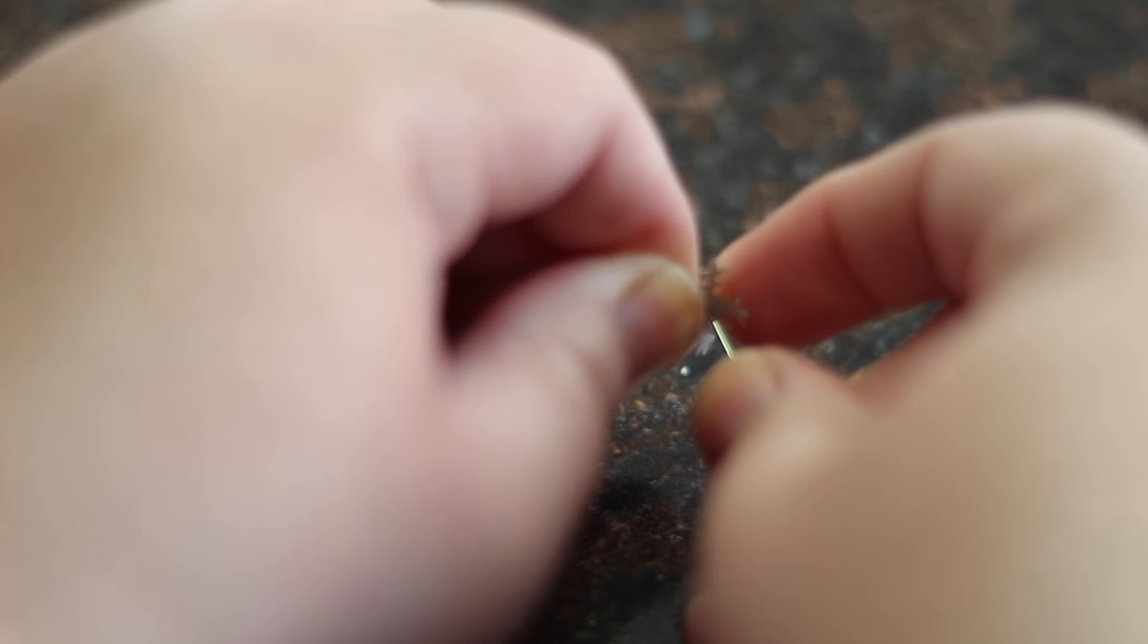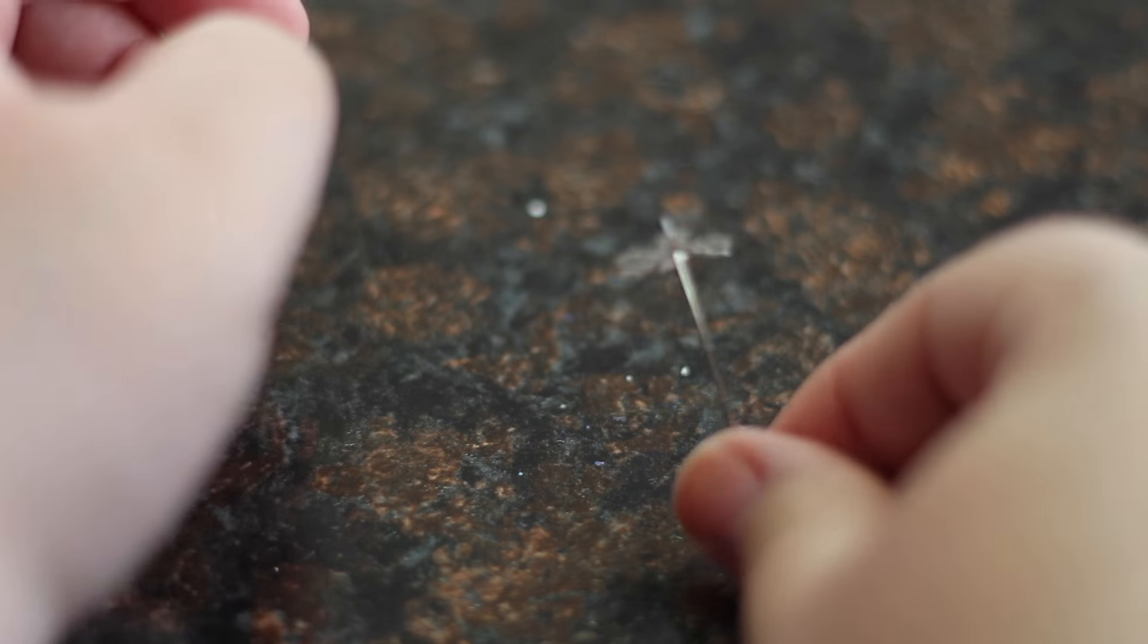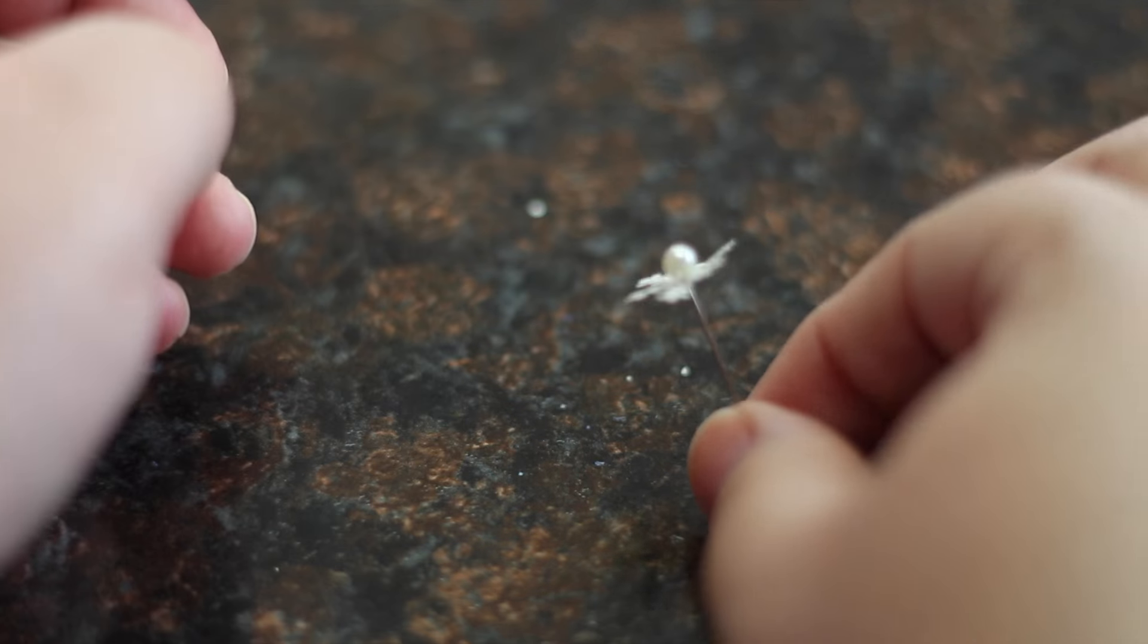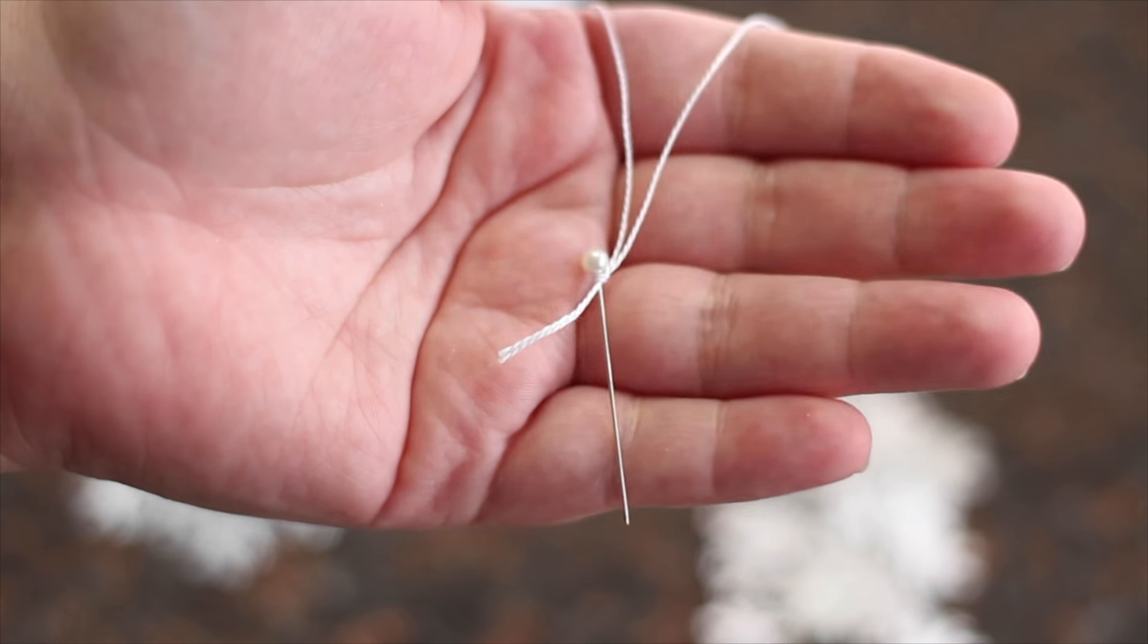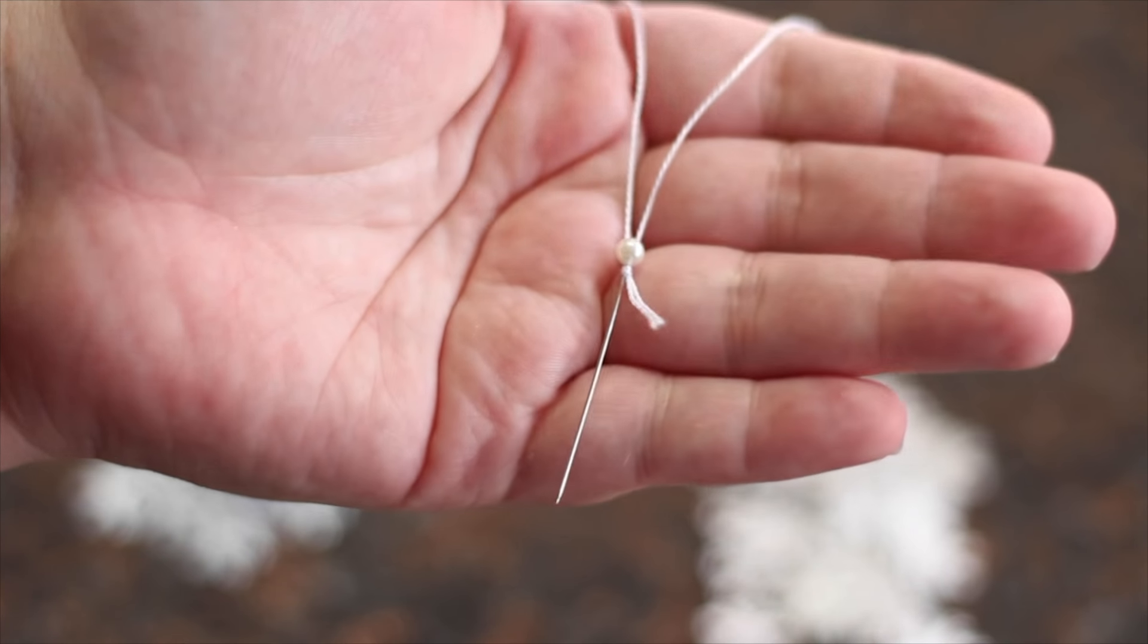Once you have your hole, go ahead and push the pin all the way through. Please try to be very careful not to poke yourself. For the first pin, you want to tie some string on it so that you'll be able to hang it on your tree.